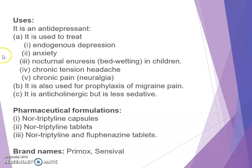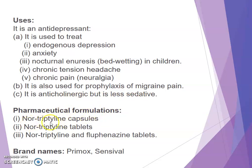Uses: nortriptyline is an antidepressant used to treat endogenous depression, anxiety, nocturnal enuresis, chronic tension headache, and chronic pain. It is also used for prophylaxis of migraine pain. It is anticholinergic but less sedative than amitriptyline. Pharmaceutical formulations include nortriptyline capsule, nortriptyline tablet, and nortriptyline and fluphenazine tablet. Brand names are Primox and Sensivol.